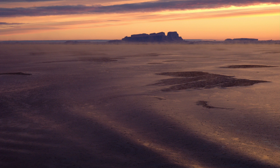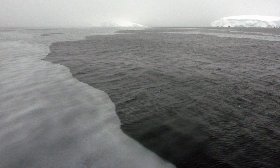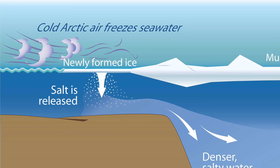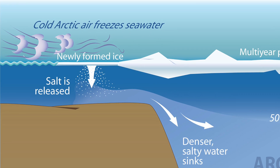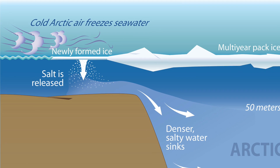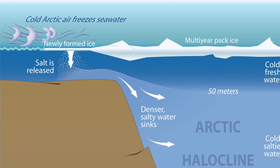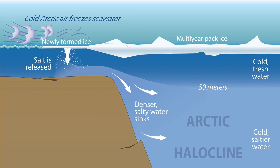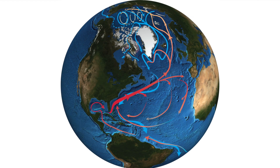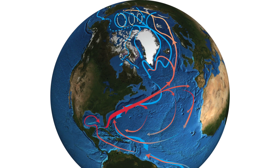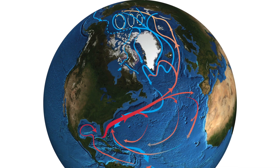The formation of sea ice helps drive ocean currents around the world. When sea water first freezes, the ice crystals form a film called frazzle. As the crystals form, they eject salt into the surrounding water. The saltier the water, the heavier it is, so it sinks. The ocean becomes layered with ice on top of cold water, on top of heavier, saltier water. Those layers move in currents around the world, playing a large role in global climate. Cold water is shown here in blue.